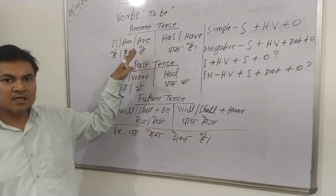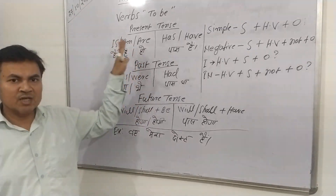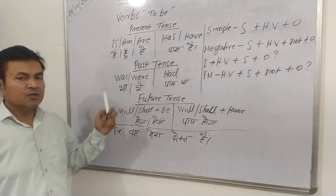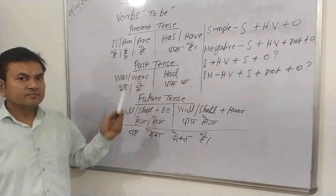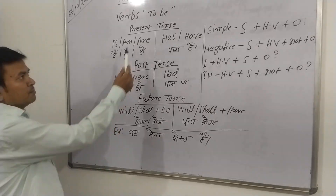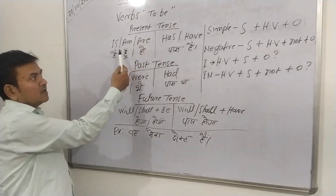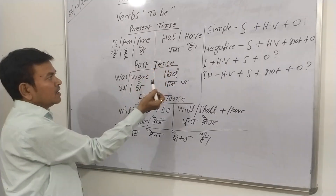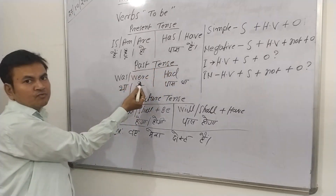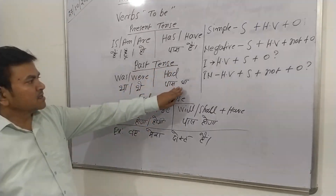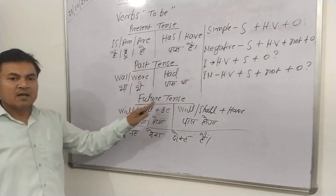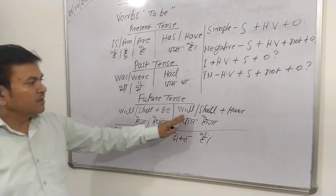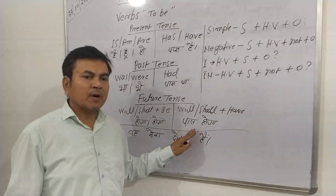That I have written here in terms of a chart — you can see here along with Hindi also to make you understand better. Here is present tense: is, am, are, and has/have for possession. Past tense: was, were, and had for possession. And will/shall plus be for future, and will/shall plus have for possession in future tense.